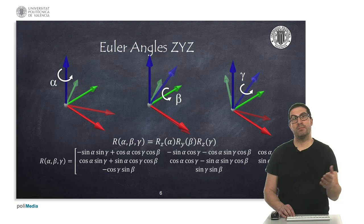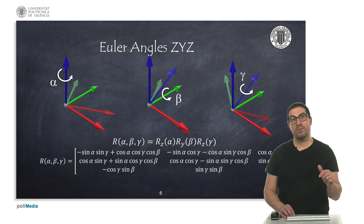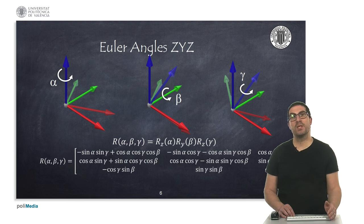But since we have different variants, we can see here in this other example a different representation, in this case ZYZ. So it implies a rotation around Z, then around V, remember it's the mobile frame, and then a rotation around W, which is again the mobile frame.